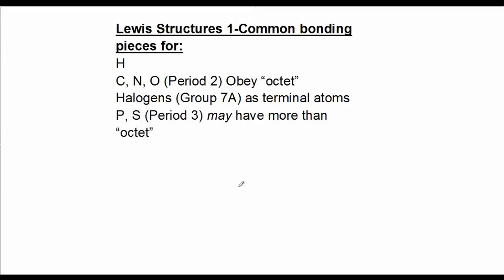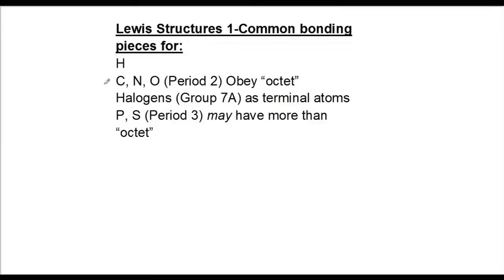I'd like to show you some common bonding for a handful of atoms that you'll come across when drawing Lewis structures. First, hydrogen, and carbon, nitrogen, and oxygen — these three atoms are in period two and will obey the octet rule. Then the halogens, which are group 7A. We'll look at these first as terminal atoms, and then two atoms in period three: phosphorus and sulfur, which may have more than their octet and disobey the octet rule.